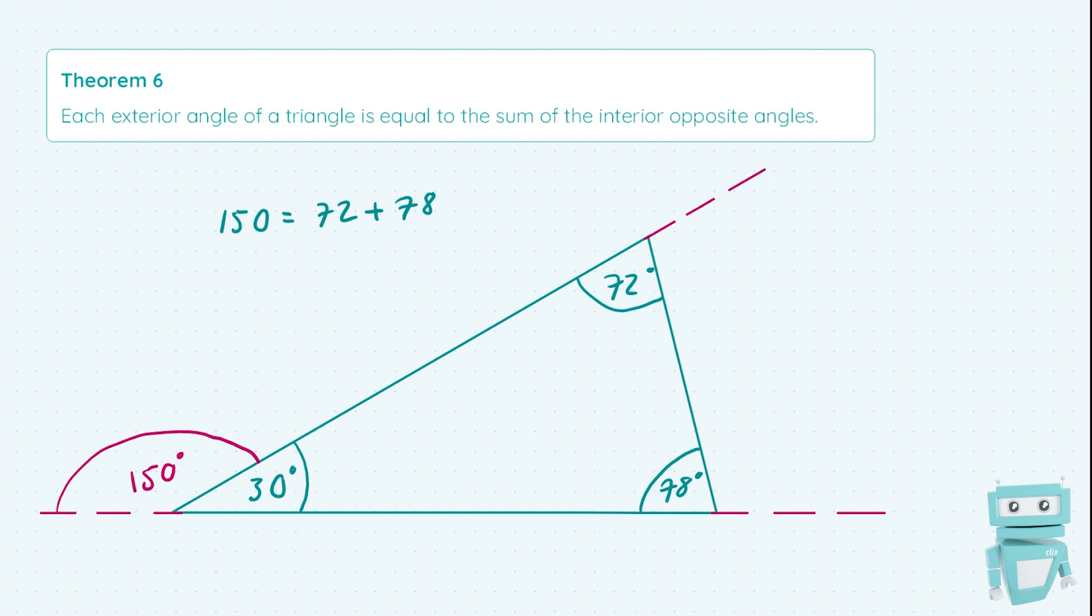The same thing is true for the other exterior angles we've chosen. For this angle, which we can call x, we know that x = 30 + 78, therefore x = 108 degrees.